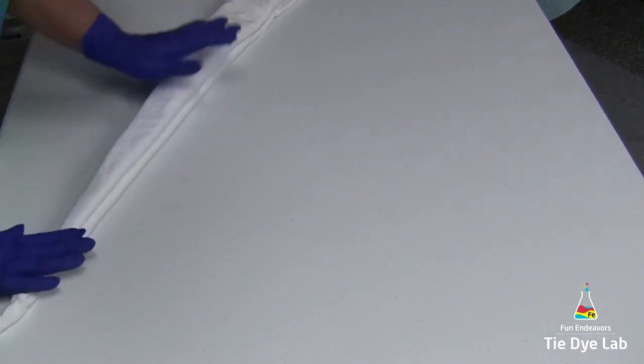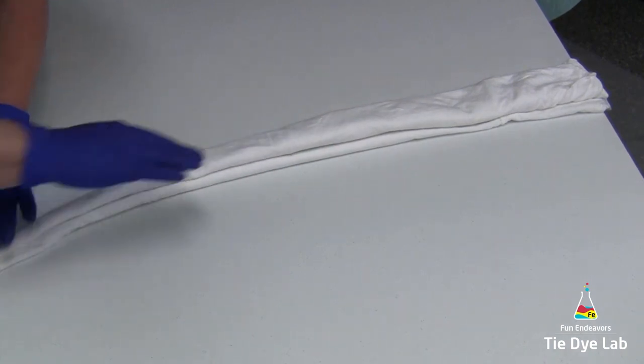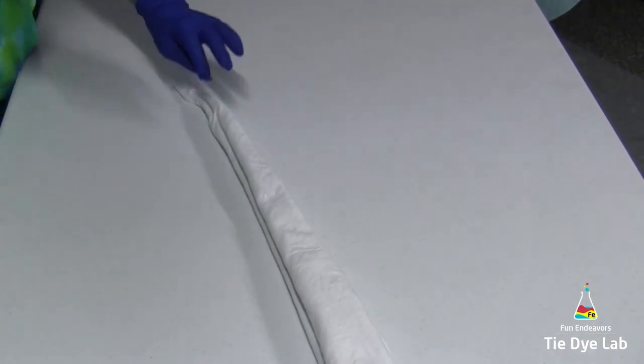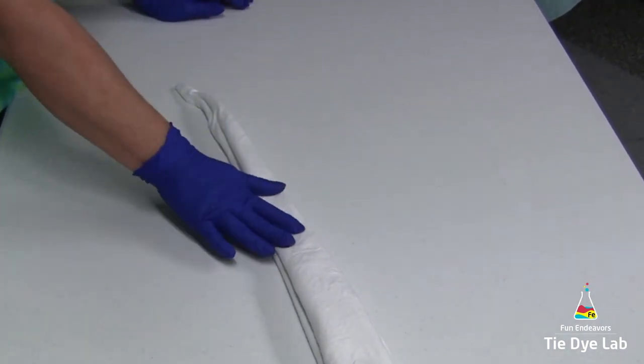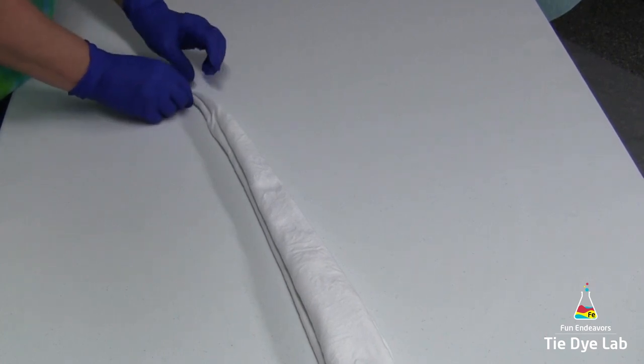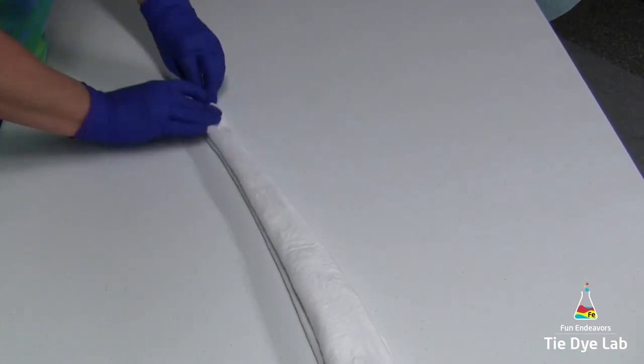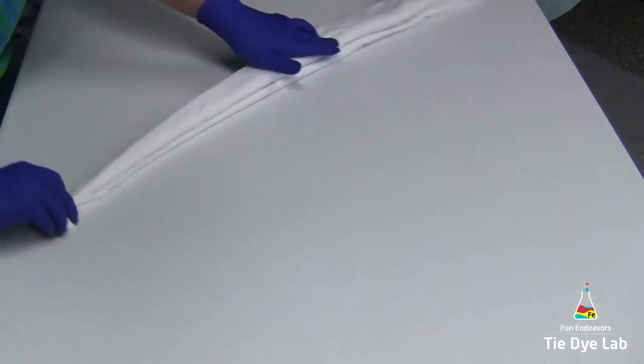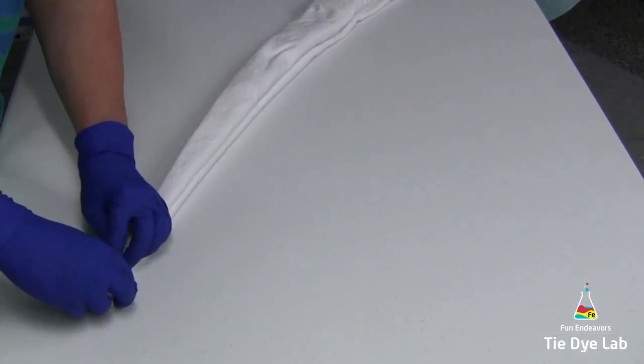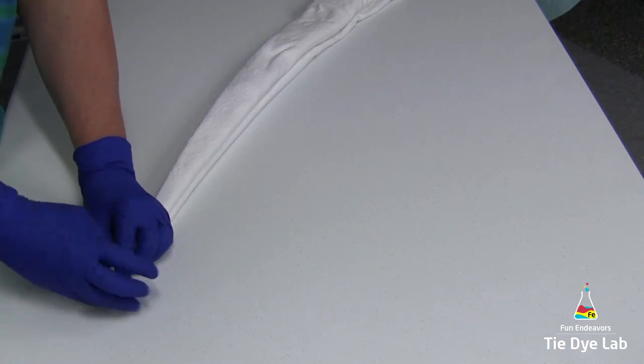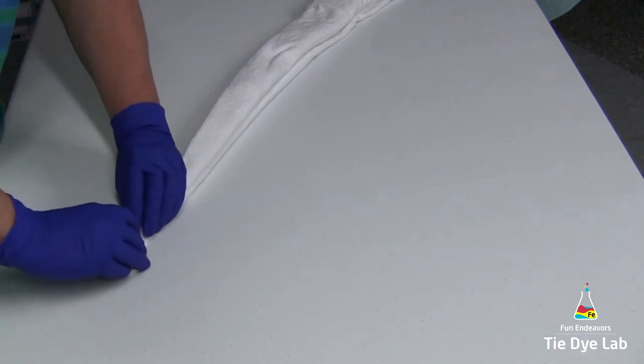I'm going to turn my shirt around. The side that's now facing me is the side that has two seams on it. That's going to be the inside of our star flower. I'm going to grab the end of my fold and begin to spiral it toward the side that has two seams.